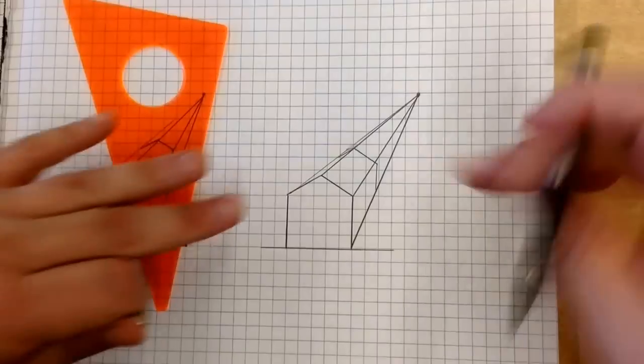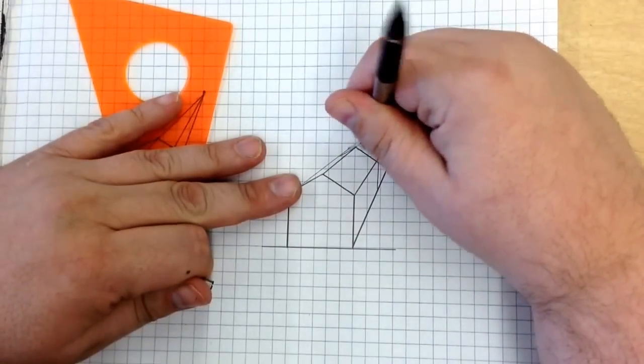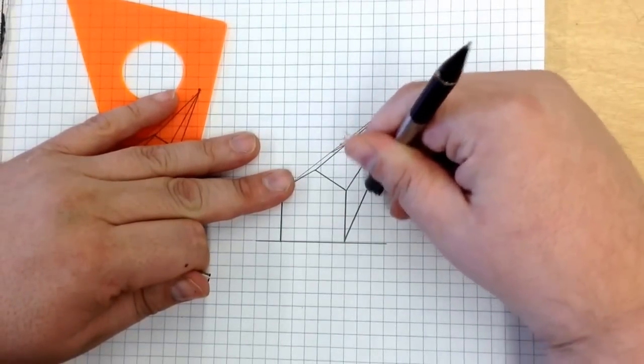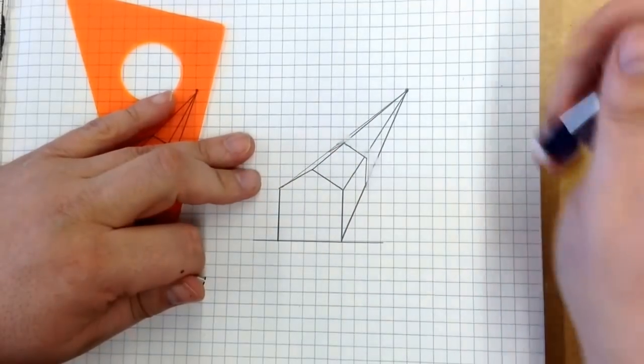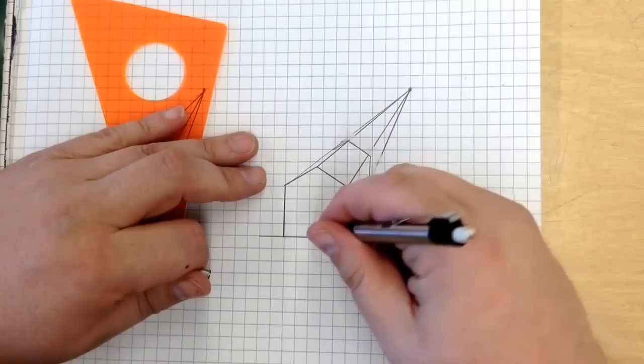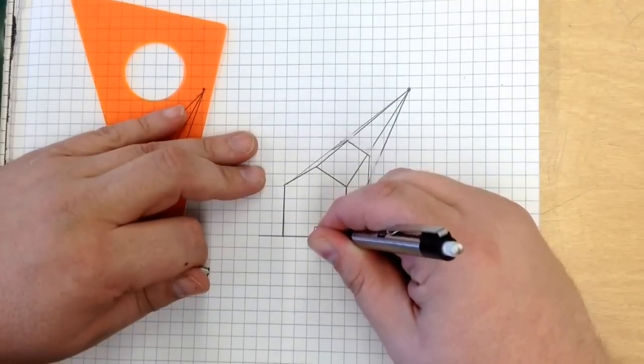Now I can go ahead and erase some of my connecting lines, just sort of disconnect them. Right there. And you can see that we have a perspective drawing of a barn. If you want to, you can even put a little door in there.